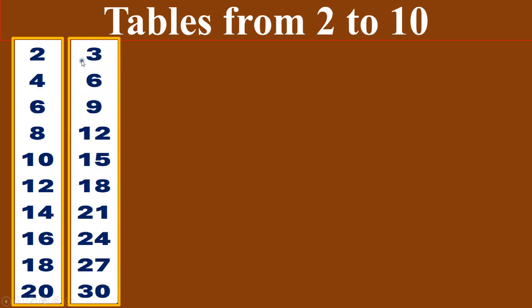Three times table. Three ones are three. Three twos are six. Three threes are nine. Three fours are twelve. Three fives are fifteen. Three sixes are eighteen. Three sevens are twenty-one. Three eights are twenty-four. Three nines are twenty-seven. Three tens are thirty.